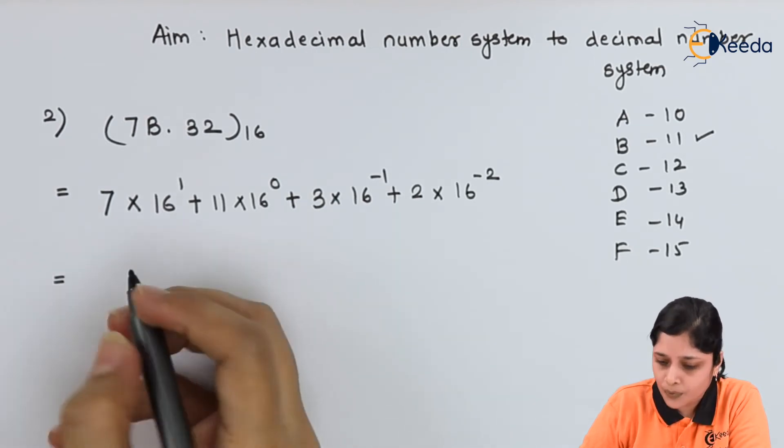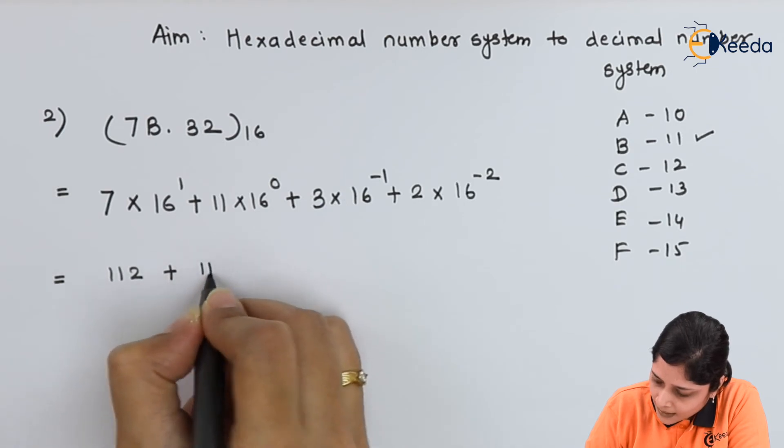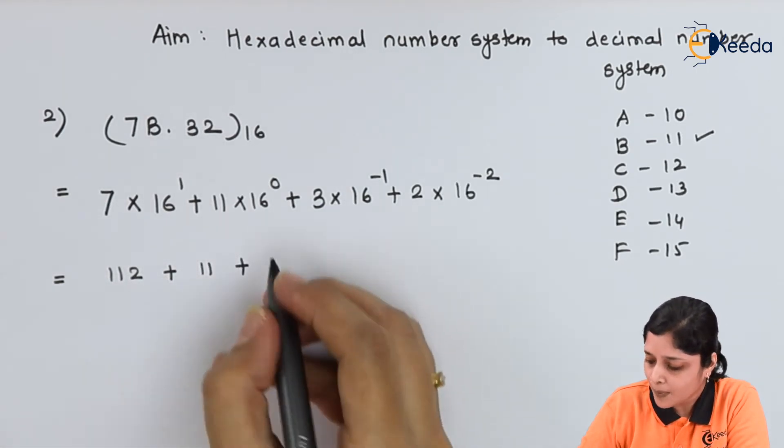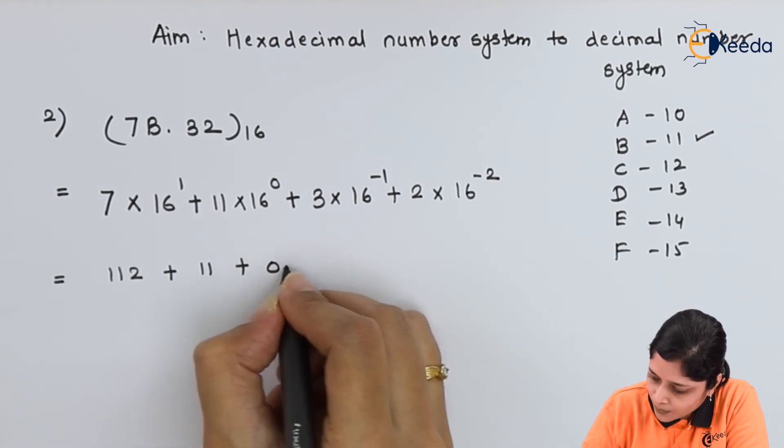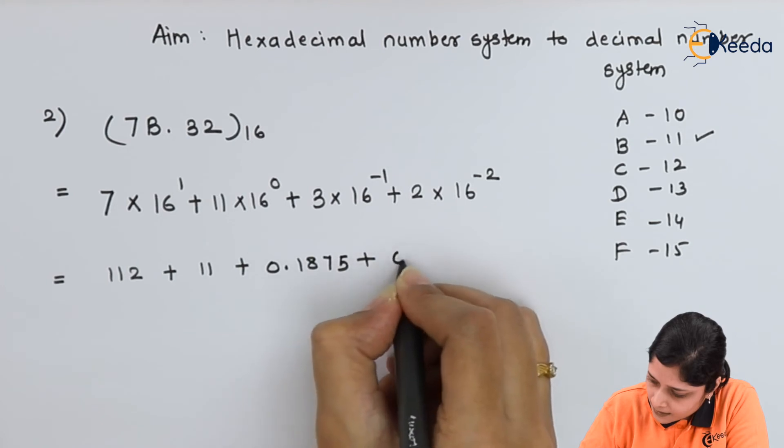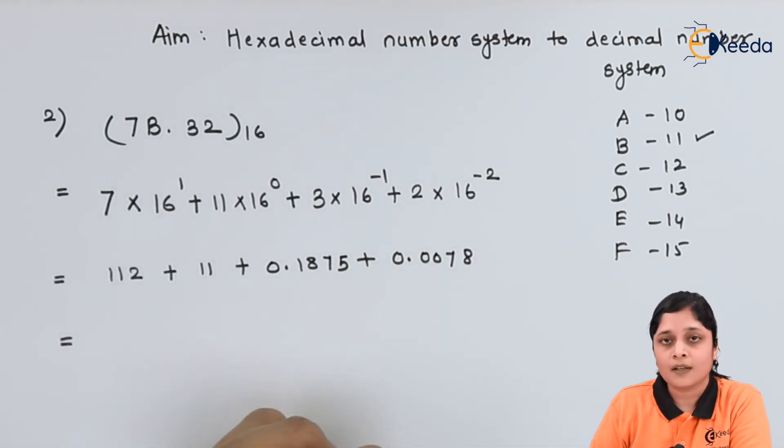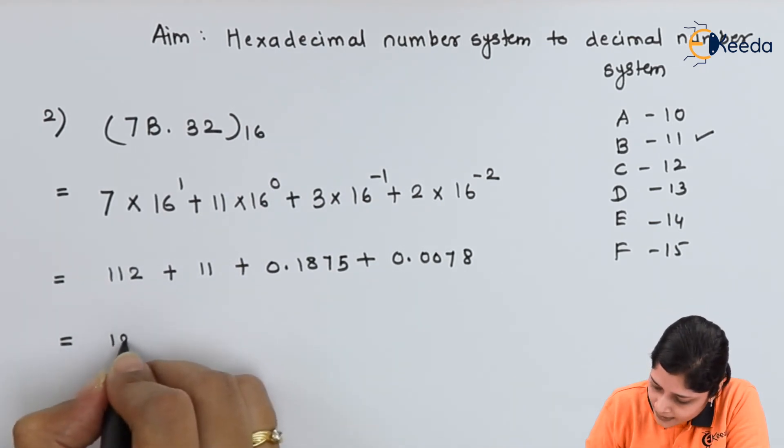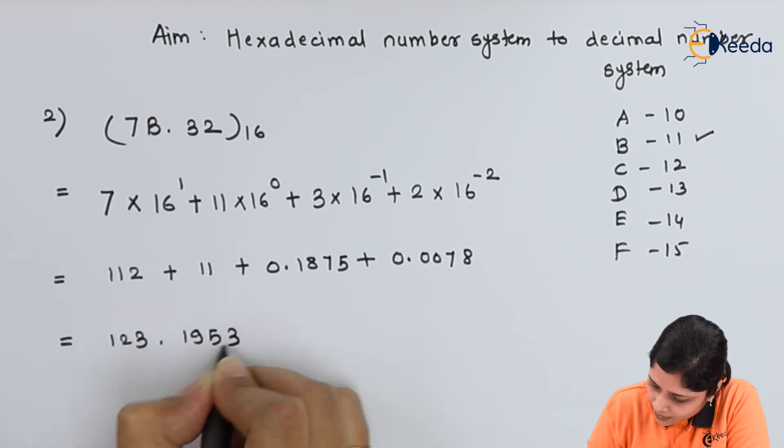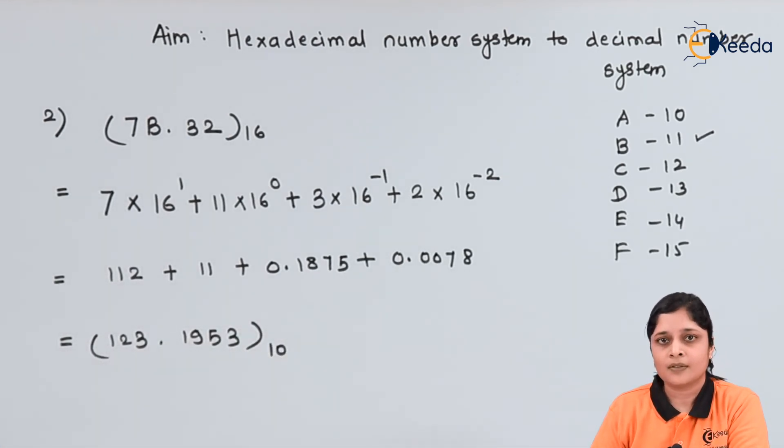This will give you 112 plus 11 plus 3 into 16 rest to the power minus 1 will give you 0.1875 plus 0.0078. If you take the addition, your final answer is 123.1953 to the best 10.